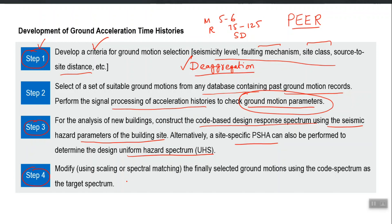Step 4 is the modification of the finally selected ground motions such that they become compatible with your site spectrum — the target spectrum. The target spectrum is the one which you construct from building code equations using the hazard parameters of your site, or it will come from PSHA. This spectrum defines the hazard level of your site.